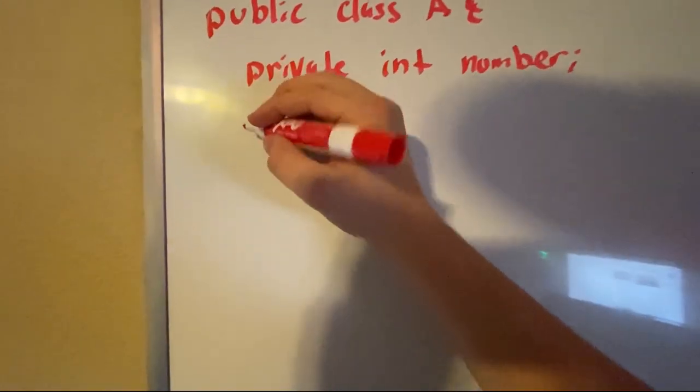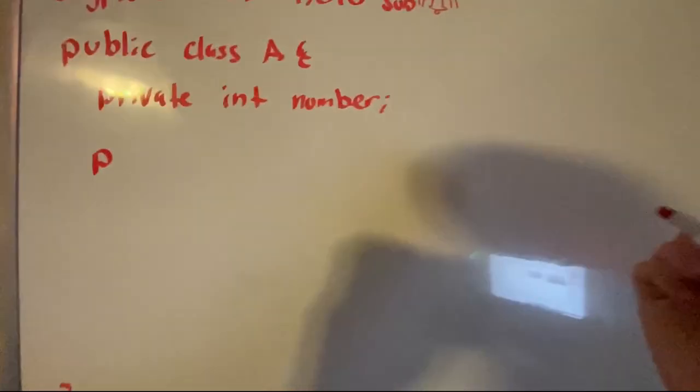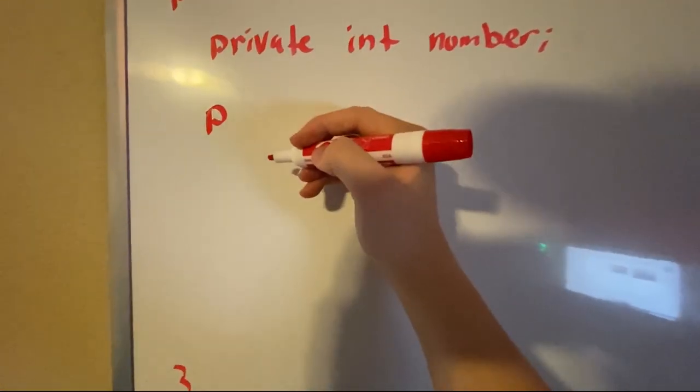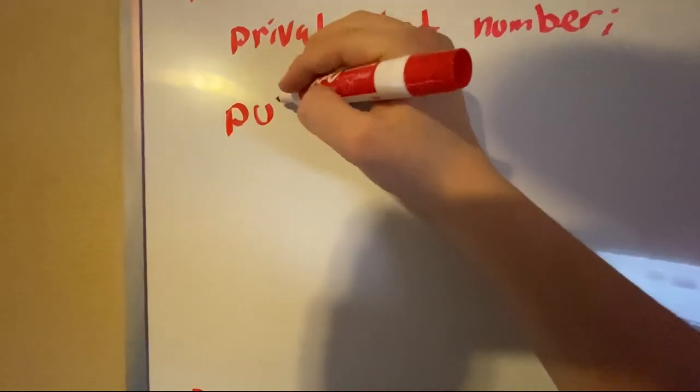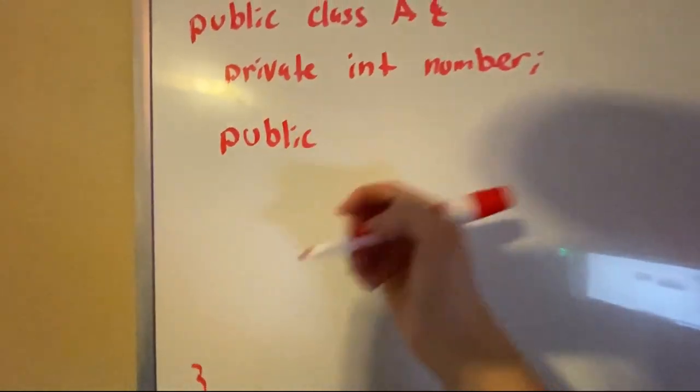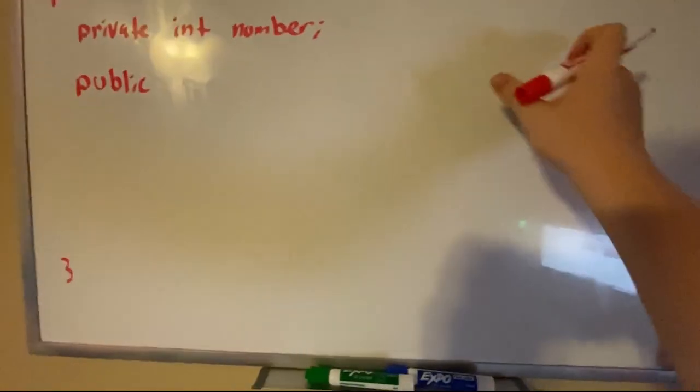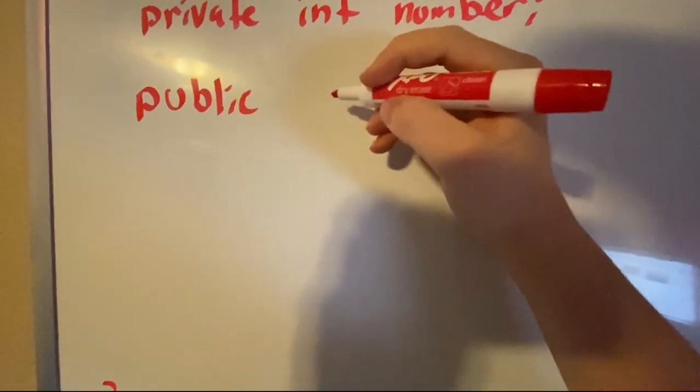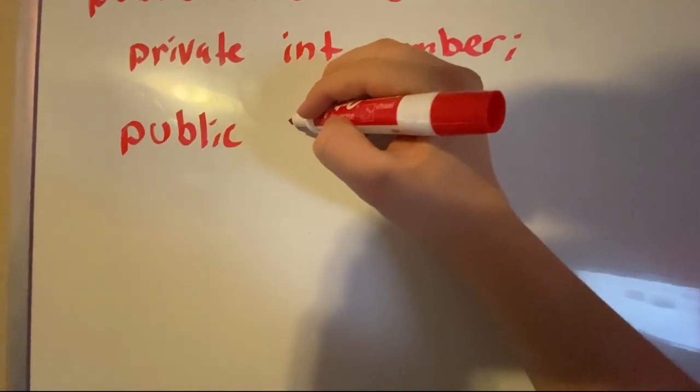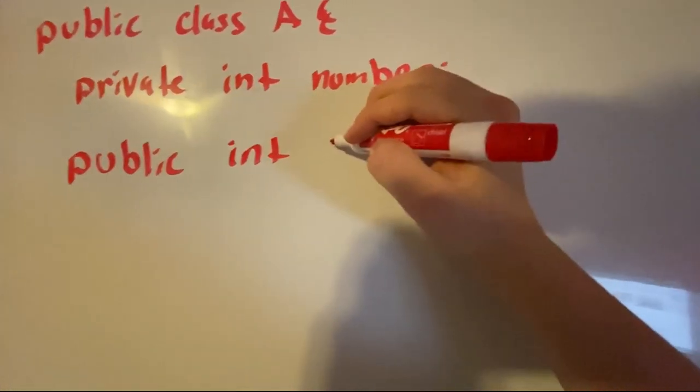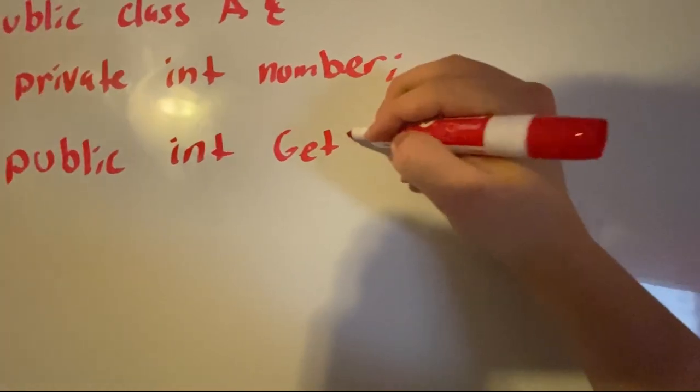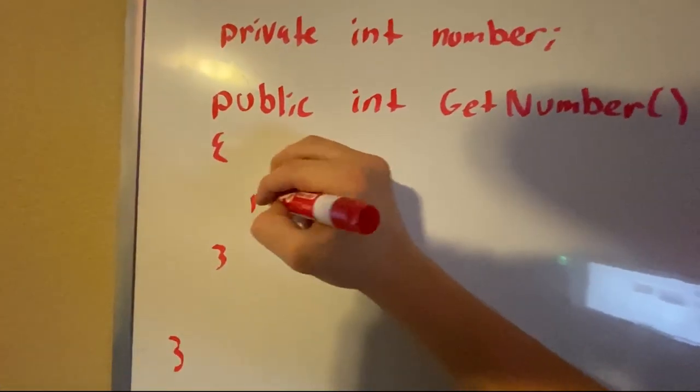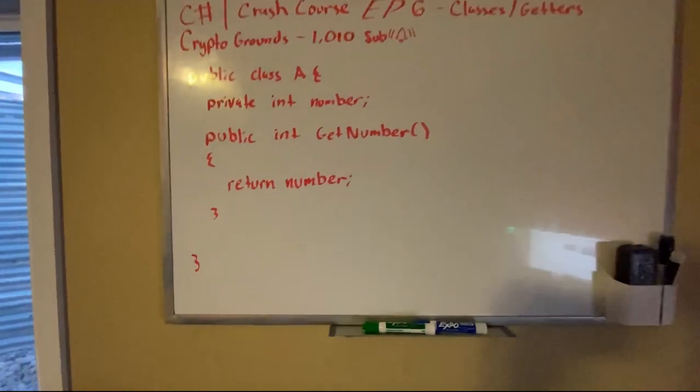So what we can do is write a method. This is called an accessor. So basically we just put public again. We want this to be public so we can access this method in another class.